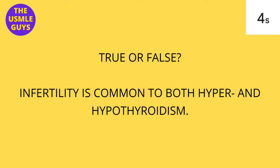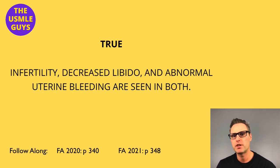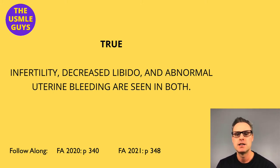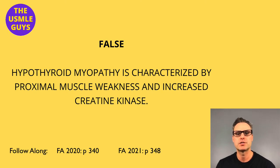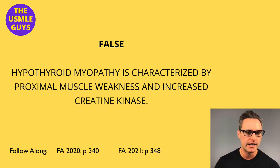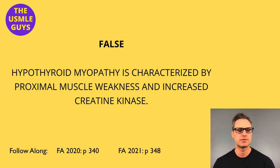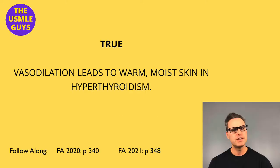Next question, true or false? This is true. Infertility, decreased libido, and abnormal uterine bleeding are seen in both hyper and hypothyroidism. Next question — this is false. Hypothyroid myopathy is characterized by proximal muscle weakness and an increase in creatine kinase — the question asked about distal muscles. Final true-false: this is true. Vasodilation leads to warm, moist skin, just like flushing of the face.